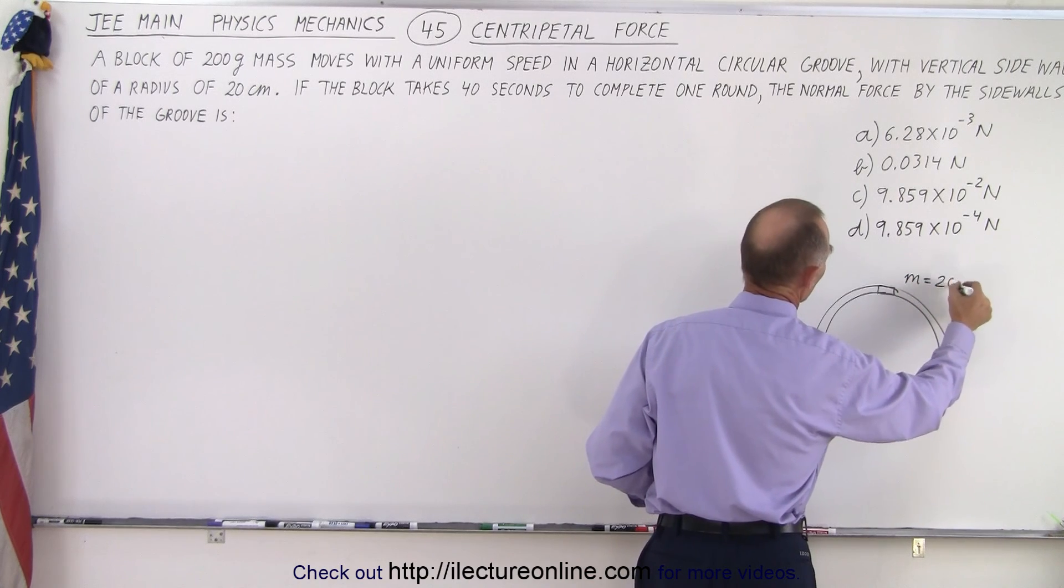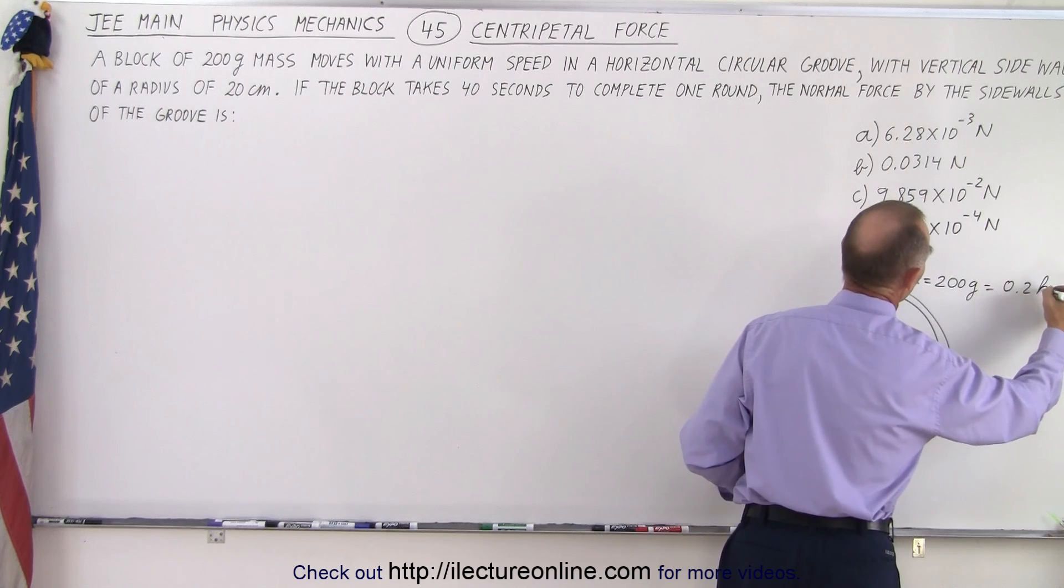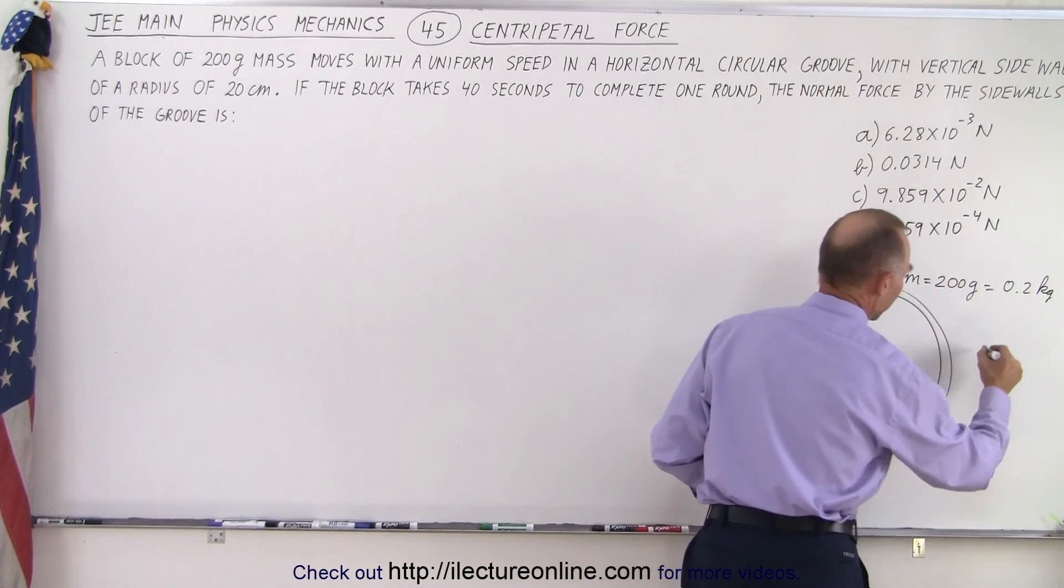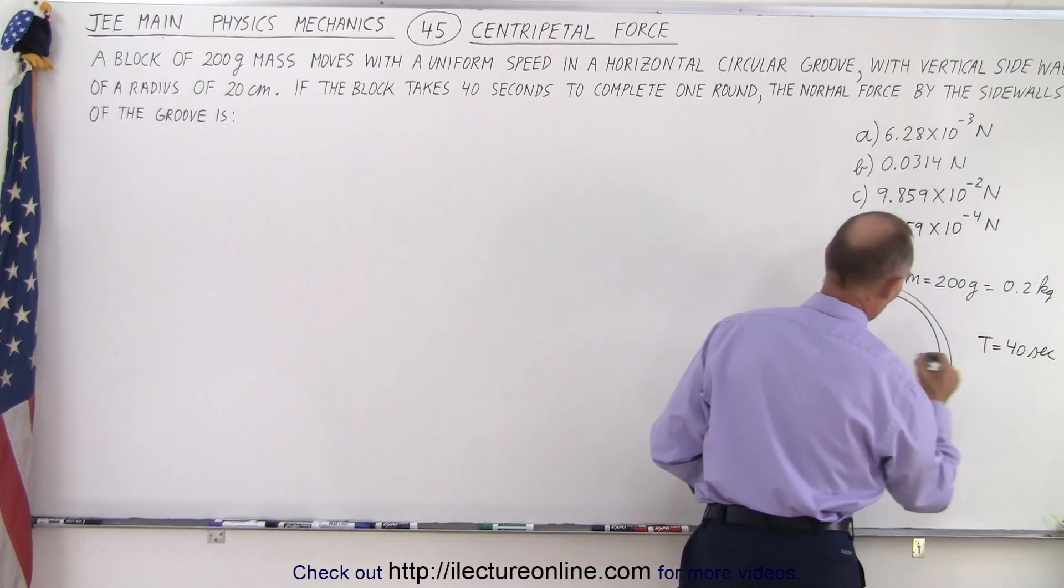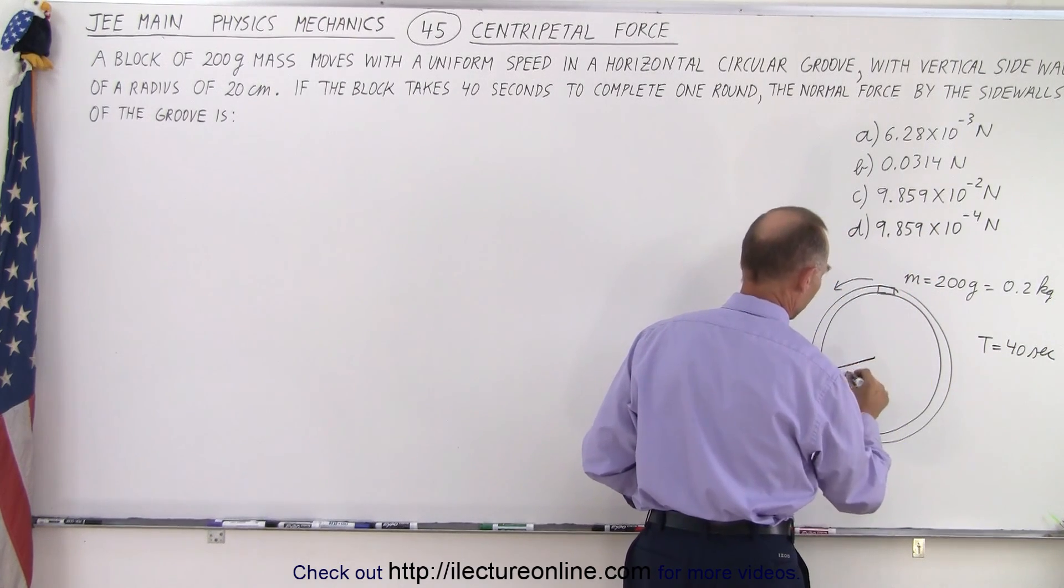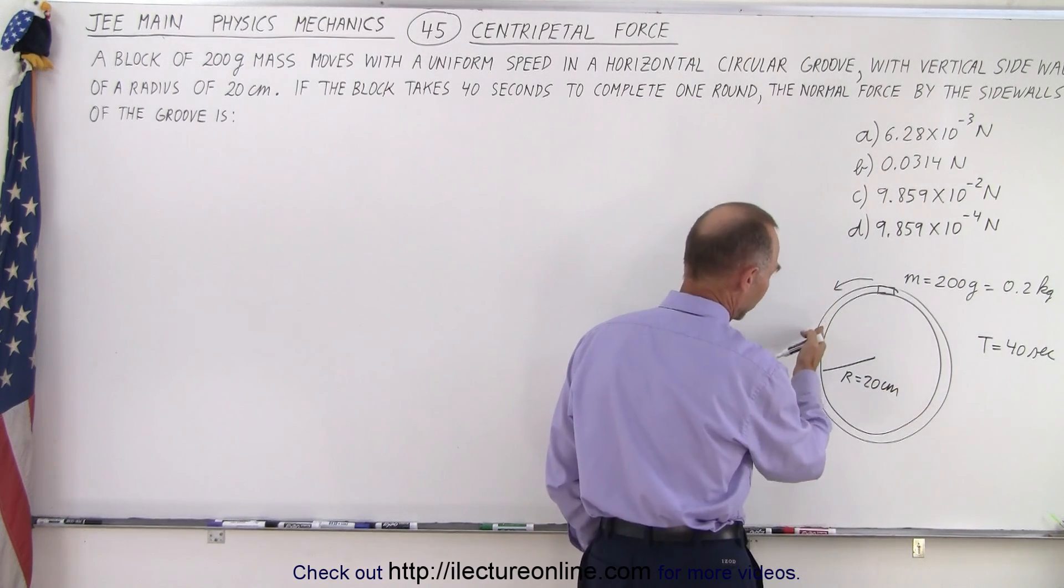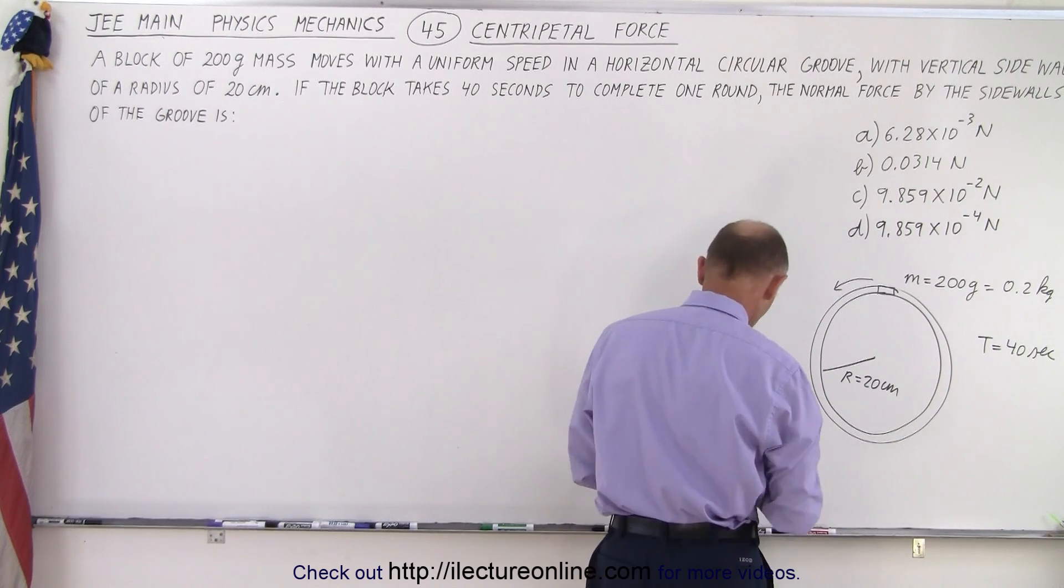We have the mass equal to 200 grams, which is 0.2 kilograms. And it's going around in a circle, and we know that the period is equal to 40 seconds. The radius of the circle is equal to 20 centimeters.